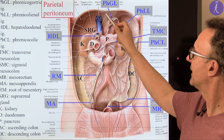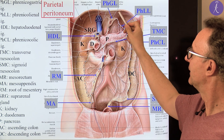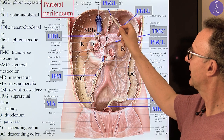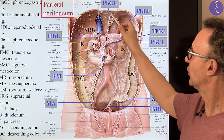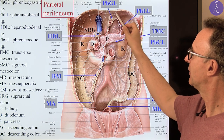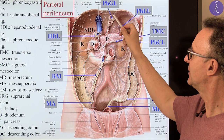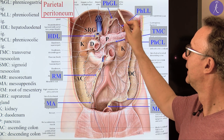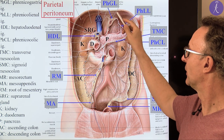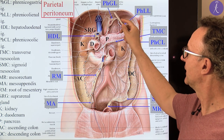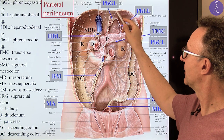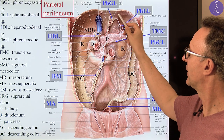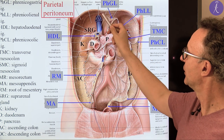On the left side, the two reflections are relatively close to each other — that's why these two together are called the left coronary ligament, and again this transition here is the left triangular ligament.